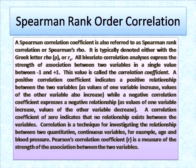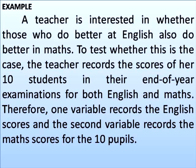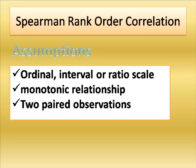Correlation is a statistical technique for investigating the relationship between two variables. Spearman rank order correlation has a few assumptions. Number one: ordinal, interval, and ratio scale — if we have ordinal, interval, or ratio scale data, we apply Spearman rank order correlation.